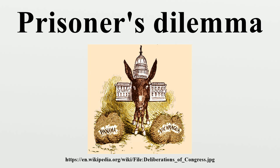The offer is: if A and B each betray the other, each of them serves two years in prison. If A betrays B but B remains silent, A will be set free and B will serve three years in prison. If A and B both remain silent, both of them will only serve one year in prison. It is implied that the prisoners will have no opportunity to reward or punish their partner other than the prison sentences they get, and that their decision will not affect their reputation in the future.